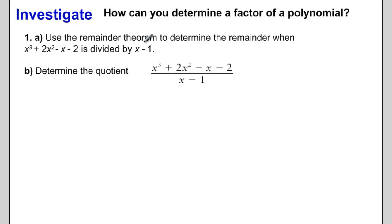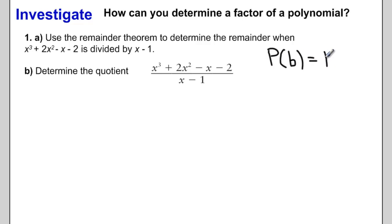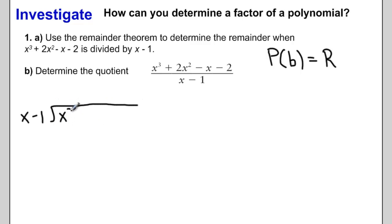Let's remember the remainder theorem from yesterday to find the remainder when we divide this polynomial by x minus 1. The remainder theorem states that when we have a polynomial evaluated at b, the answer that we get would be the remainder if we were to do the division. So let's do this division: x minus 1 is being divided into x cubed plus 2x squared minus x minus 2.